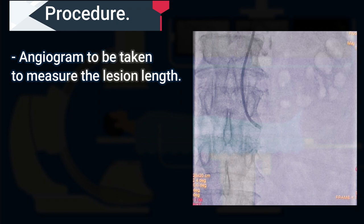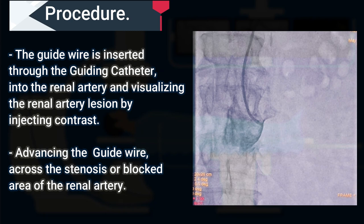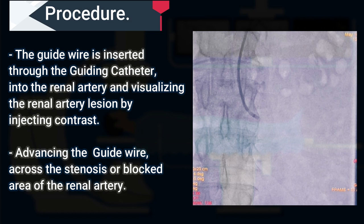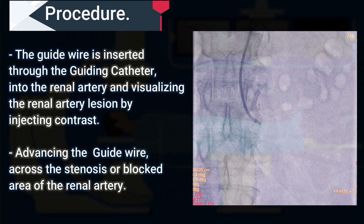After positioning the catheter, an angiogram is taken to measure the lesion length. Then the guide wire is inserted through the guiding catheter into the renal artery, visualizing the renal artery lesion by injecting contrast. After that, the guide wire is advanced across the stenosis or blocked area of the renal artery.